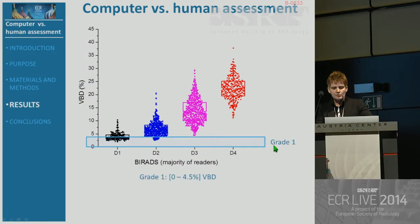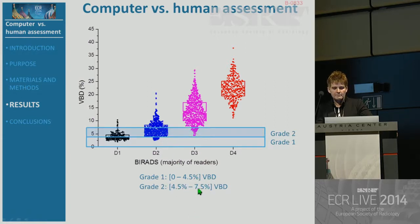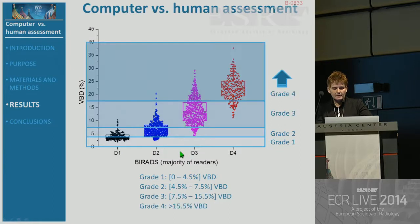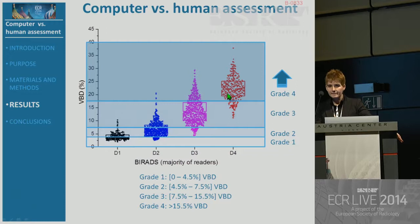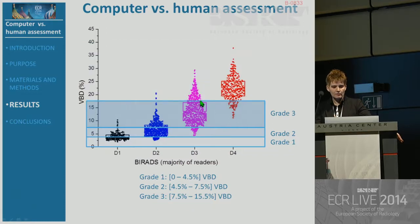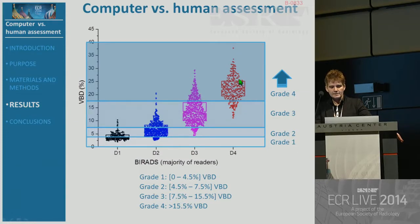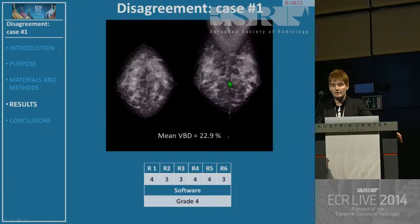Looking at how Volpara divides grades: they defined a range for each grade. For example, grade one is between zero and 4.5% breast density, grade two is 4.5–7.5%, grade three up to 15.5%, and grade four is above 15.5%. Of course these thresholds are more or less arbitrary. You can see that they include some cases categorized into one class that are categorized with the adjacent class. For example, grade four includes cases categorized as three, and most categorized correctly — though we have to discuss what 'correctly' means here.